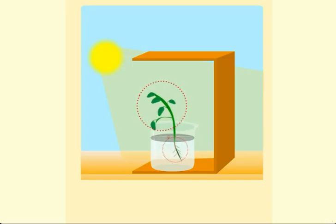Understood? Good. So, we successfully illustrated that light and gravity change the direction in which plant parts grow.